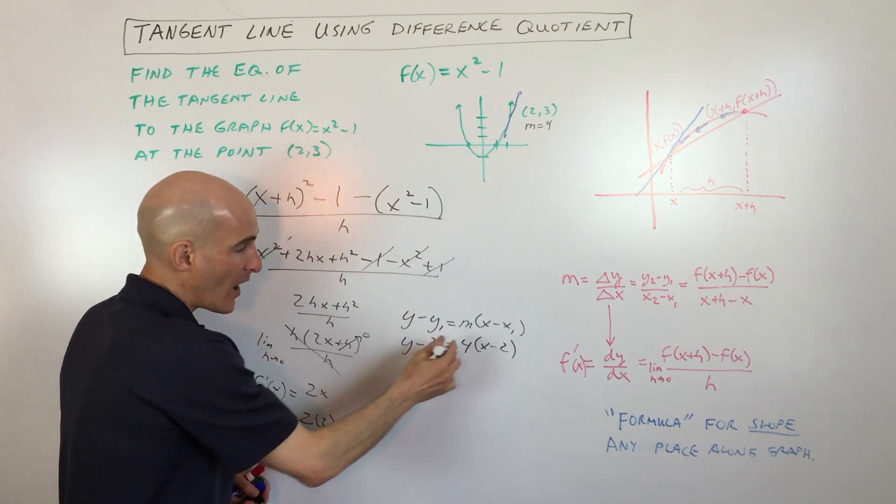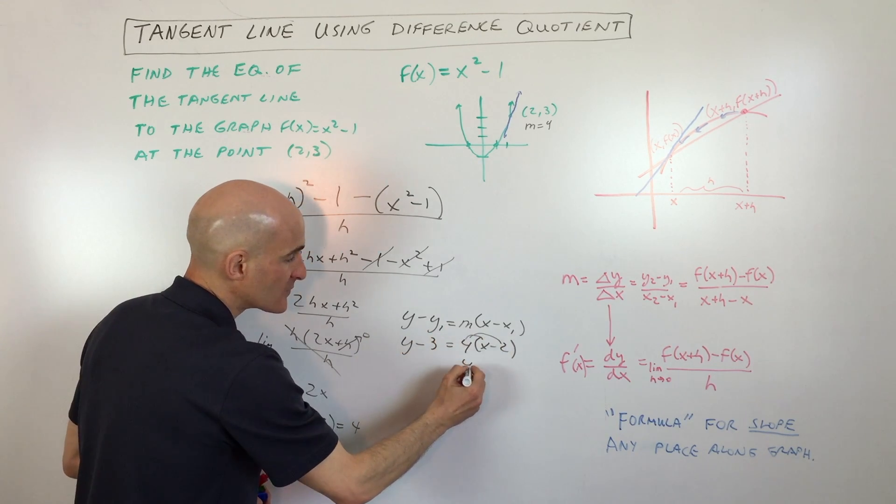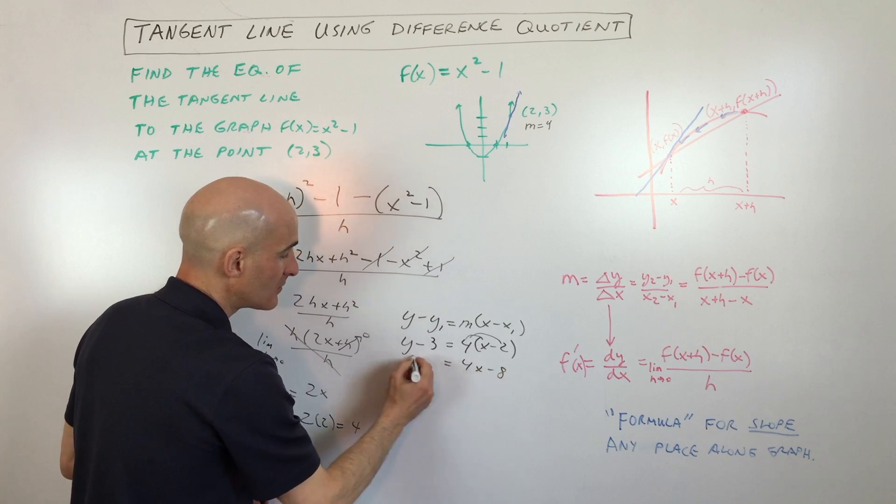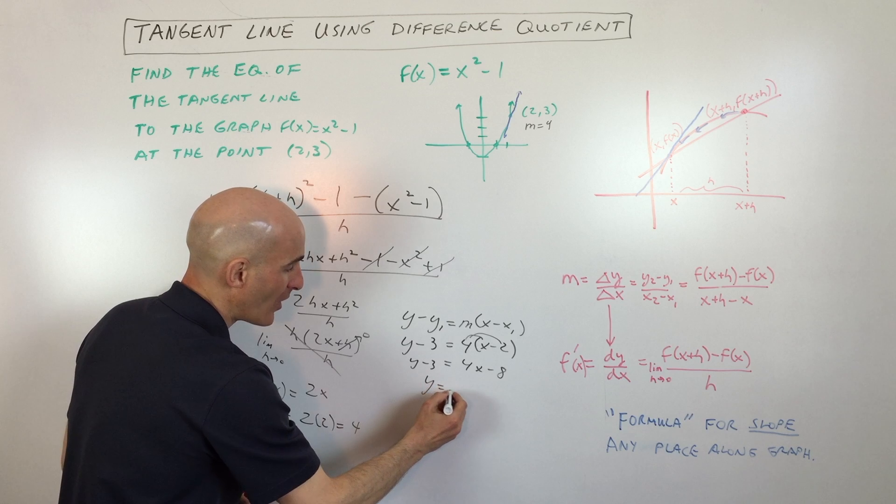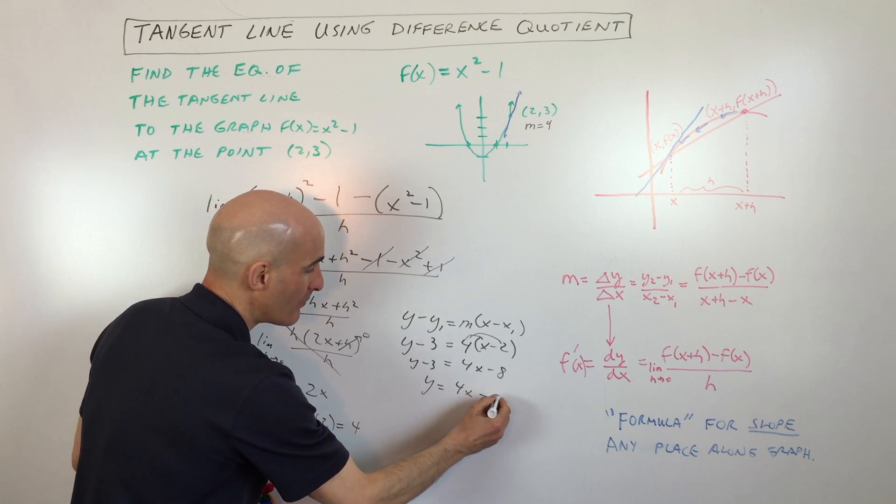Now I'm just going to rewrite it. I'm going to solve for y. So I'll just distribute the 4. That's 4x - 8. And then I'm going to add the 3 to the other side to get the y by itself. So that's y = 4x - 5.